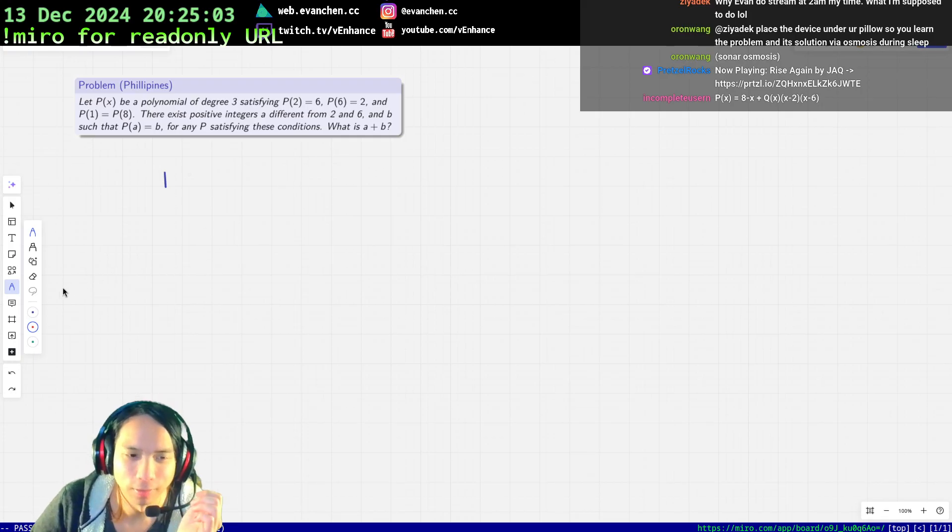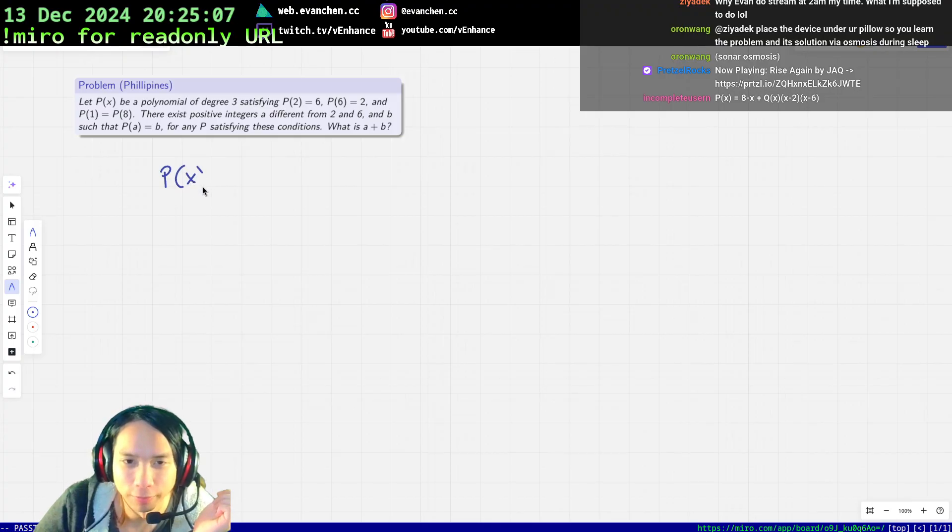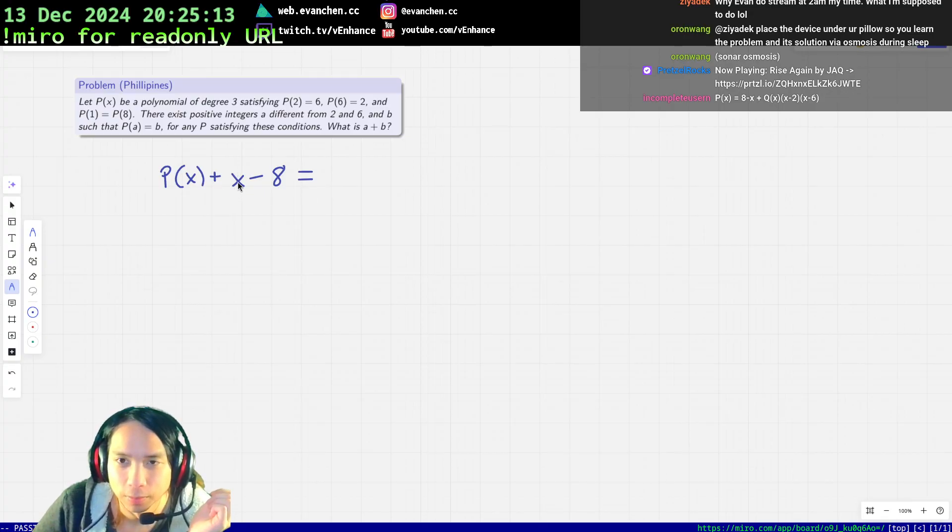I think the 2 and 6 is probably better. So I'm going to write P(x) + x - 8. The point is that at 2 and 6, this is 0. So this is going to be (x-2)(x-6).